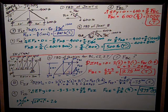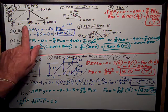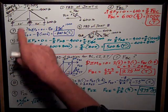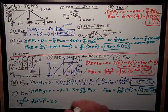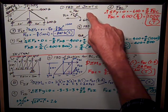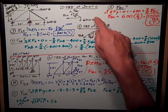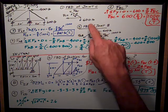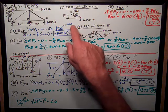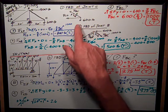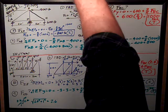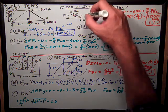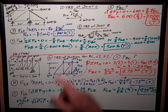We start off with this truss here, which has four joints A, B, C, D, with this geometry here. The first question is, draw a free body diagram of joint C, which is this point over here. We have member FBC, FCD, and the 600-pound applied force.